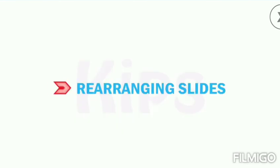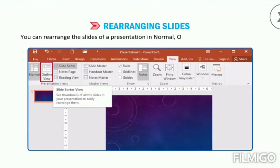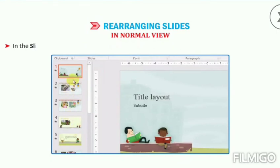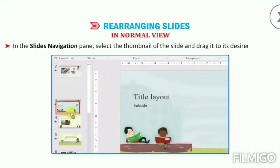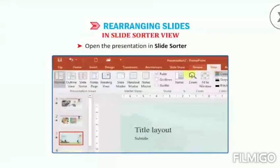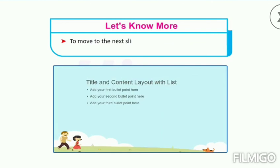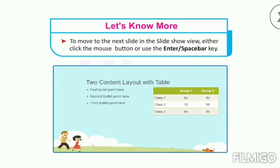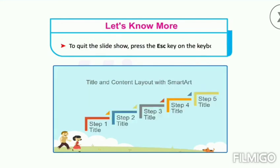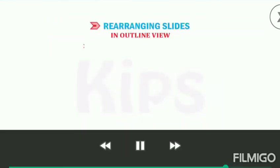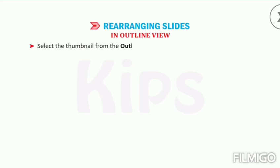Let us learn how to rearrange slides. You can rearrange the slides of a presentation in Normal, Outline, and Slide Sorter views. In Normal view, open the presentation, then in the Slides Navigation pane, select the thumbnail of the slide and drag it to its desired position. In Slide Sorter view, open the presentation, select the thumbnail of the slide to be moved and drag it to its desired location. To move to the next slide in Slide Show view, either click the mouse button or use the Enter or Space Bar key. To quit the slide show, press the Escape key. In Outline view, open the presentation, select the thumbnail from the Outline pane and drag it to the desired location. A horizontal line appears as you drag the slide.